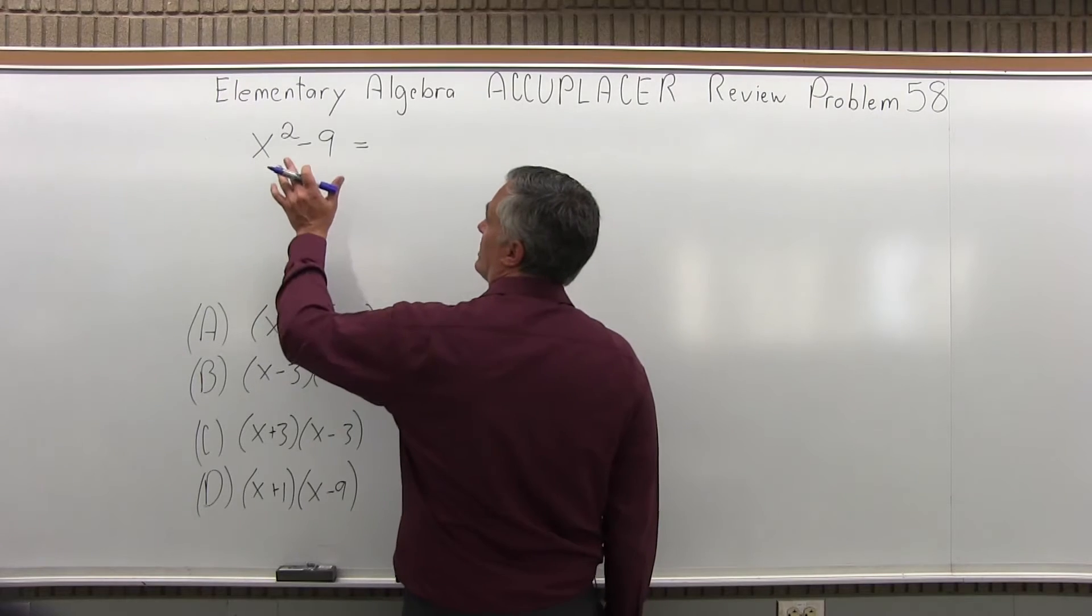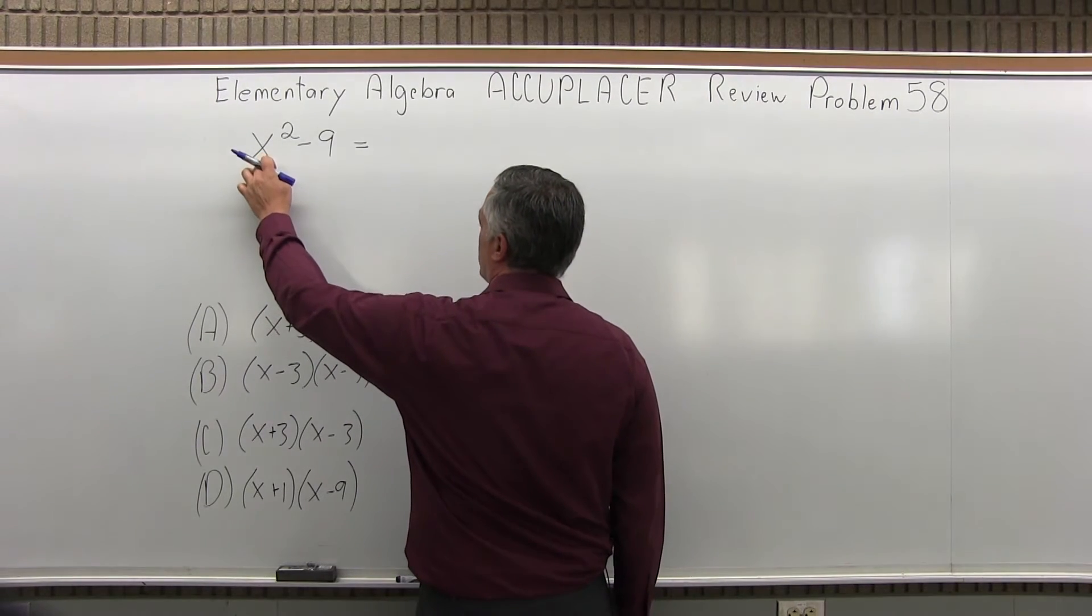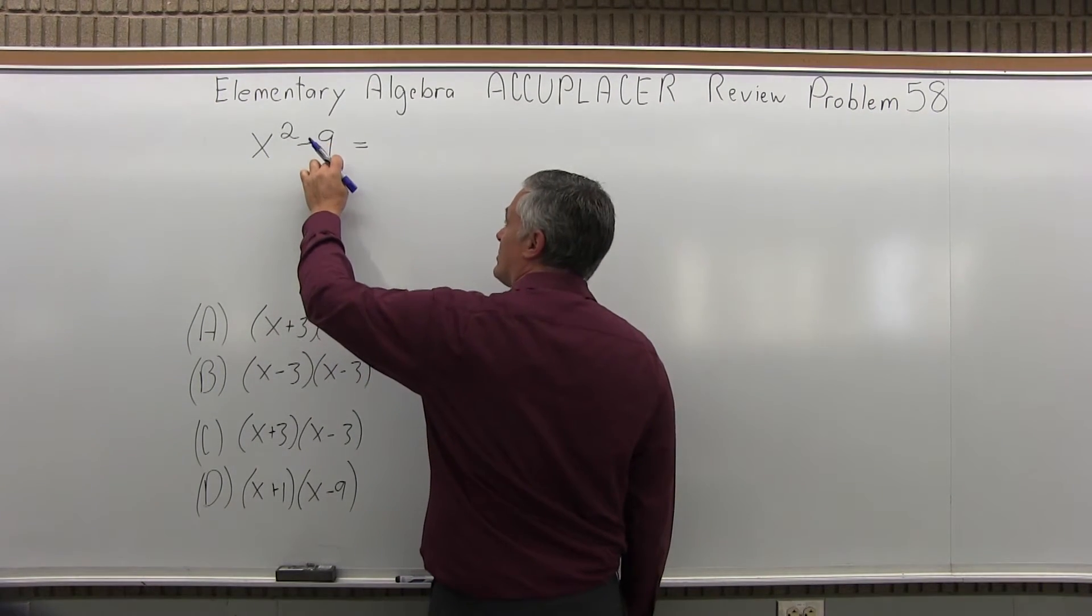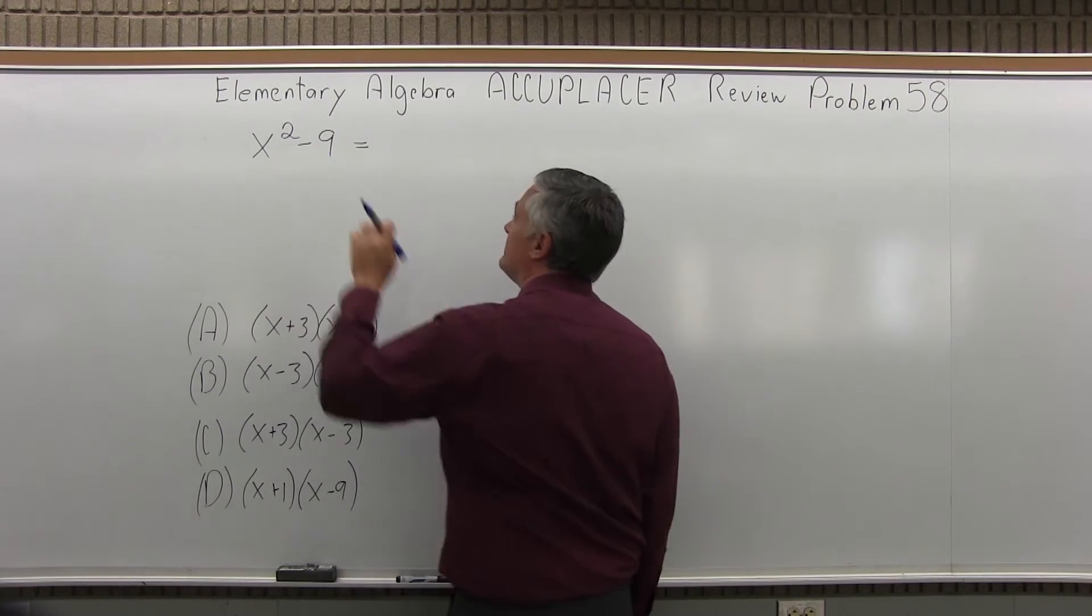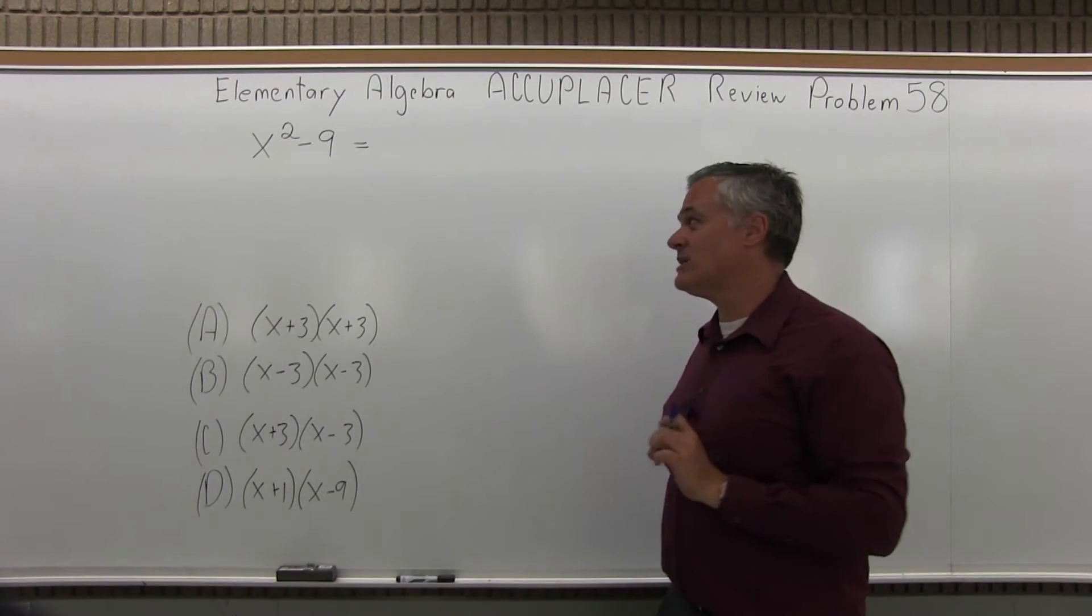Well, x squared minus 9 is what you call a difference of squares. You have something with a really nice square root, something else with a really nice square root, and a minus in between them. It has to be a minus, not a plus.